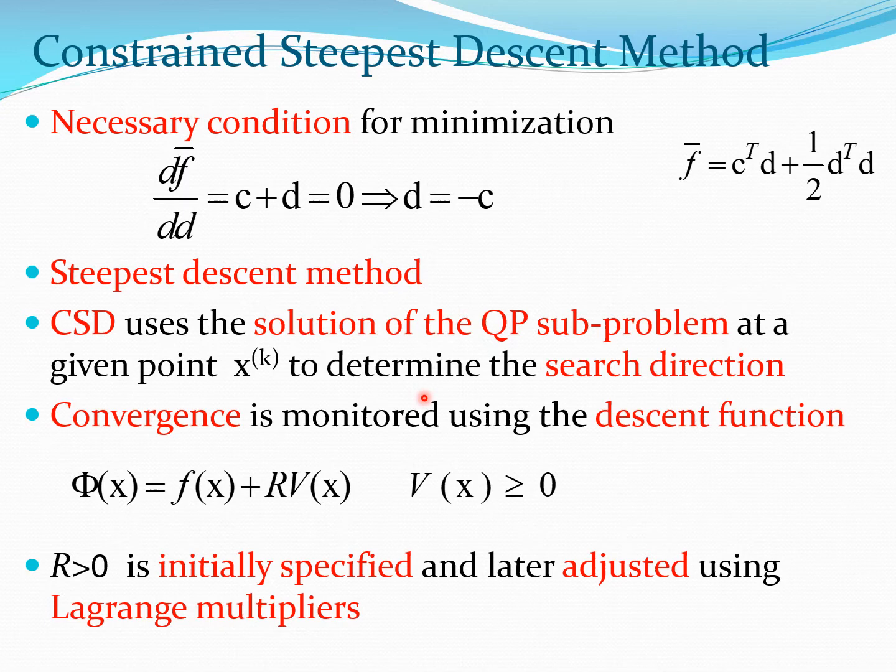As I mentioned before, CSD uses the solution of the QP sub-problem at a given point x^(k) to determine the search direction. The convergence of this problem is monitored using the Shenichny descent function, which you will recall was phi(x) equals f(x), the cost function, plus R times V(x), where R is the penalty parameter which is a number greater than 0, and V(x) is the maximum constraint violation which should also be greater than or equal to 0.